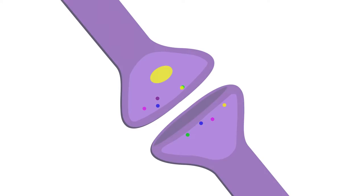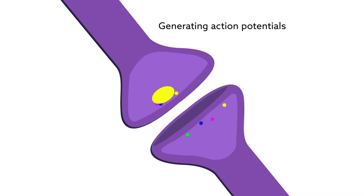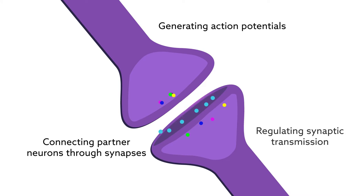Inside cells, proteins carry out the processes that make life possible. In nerve cells, proteins help the brain process information and store memories by generating action potentials, connecting partner neurons through synapses, and regulating synaptic transmission.